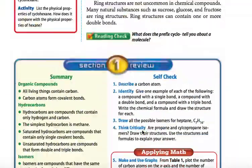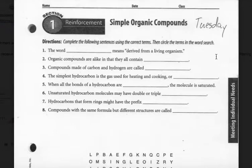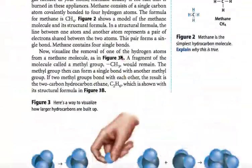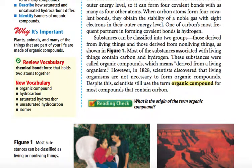That wraps up the reading for Lesson 1. Your assignment — Simple Organic Compounds — asks you to complete sentences using correct terms, then circle those terms in a word search. Go back through your reading; at the beginning of the section you'll find your vocabulary: organic compound, hydrocarbon, saturated hydrocarbon, unsaturated hydrocarbon, and isomer. These terms are highlighted right in the reading itself, so you can match definitions from the worksheet to the reading. You can also look in the glossary of your textbook.